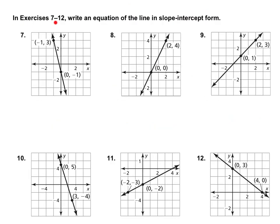For Exercises 7 through 12, write an equation of the line in slope-intercept form. Let's take a look at number 7. We need to find the y-intercept and the slope, then plug them into the equation. The y-intercept is where it crosses the y-axis. As you can see, that point is where it crosses the y-axis, so the y-intercept is negative 1.